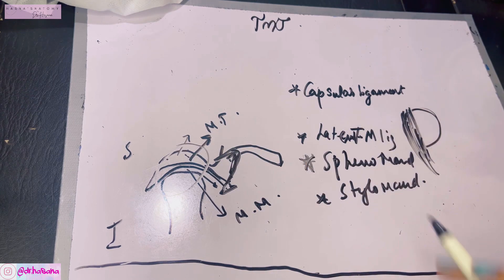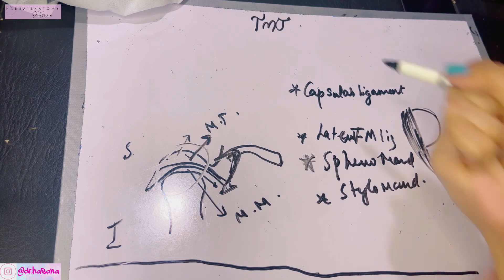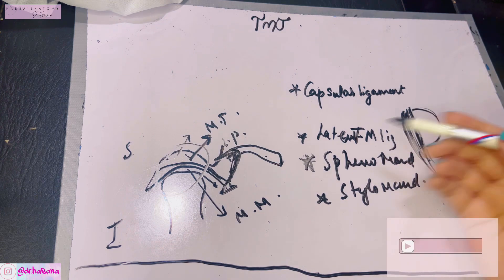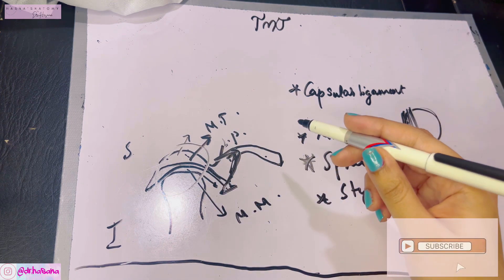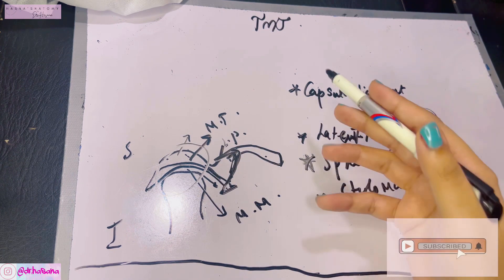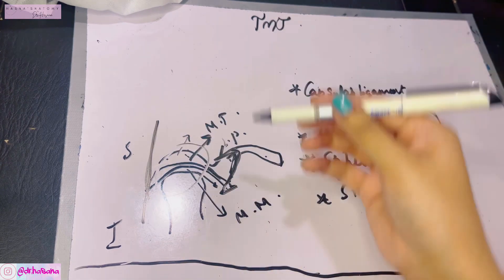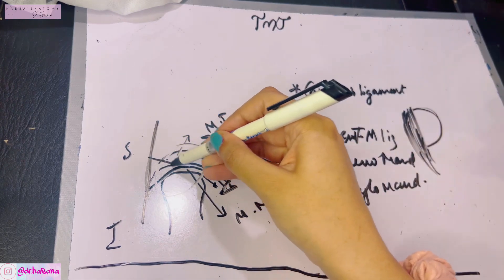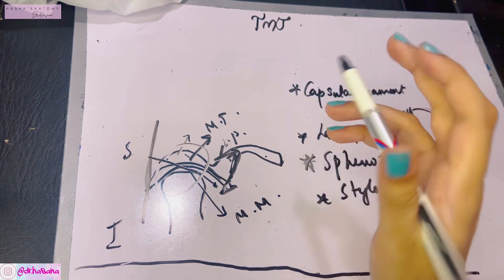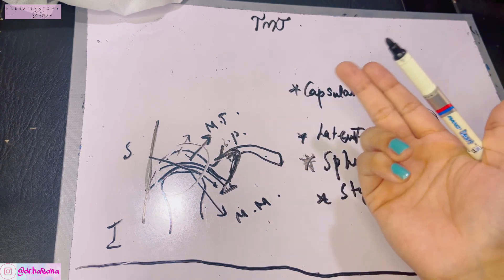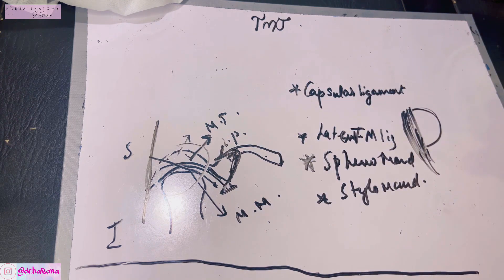The functions of the intra-articular disc include preventing friction between the articulating surfaces, shock absorption, regulating movements via proprioceptive fibers, and distributing weight. Importantly, the articular disc is attached to the lateral pterygoid muscle, which pulls the disc forward during protraction. Blood supply is from the superficial temporal artery and maxillary artery; nerve supply is from the auriculotemporal and masseteric nerves, both branches of the mandibular nerve.